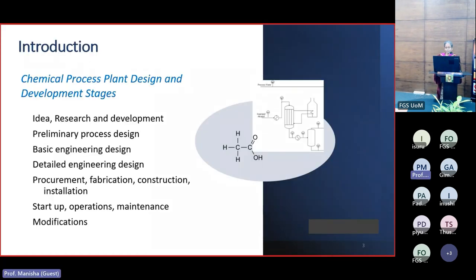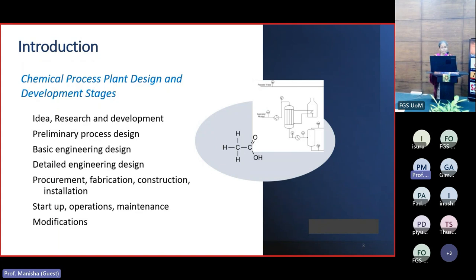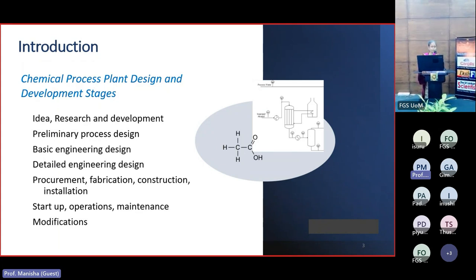If we consider the chemical process plant design and development stages, there are several stages involved after getting the idea of the chemical we are going to manufacture. The first phase is the research and development phase where the process concept is developed from the lab scale to the pilot scale. In the preliminary process design stage we generate alternate processes and identify major equipment involved.